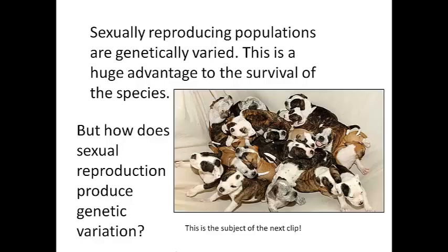Sexually reproducing populations are genetically varied because the gametes are also different, and the combinations they make when an egg and sperm fertilize each other bring a whole range of combinations of alleles together. This genetic variation in the offspring is a huge advantage to the survival of the species. How sexual reproduction produces genetic variation is going to be the subject of the next clip.